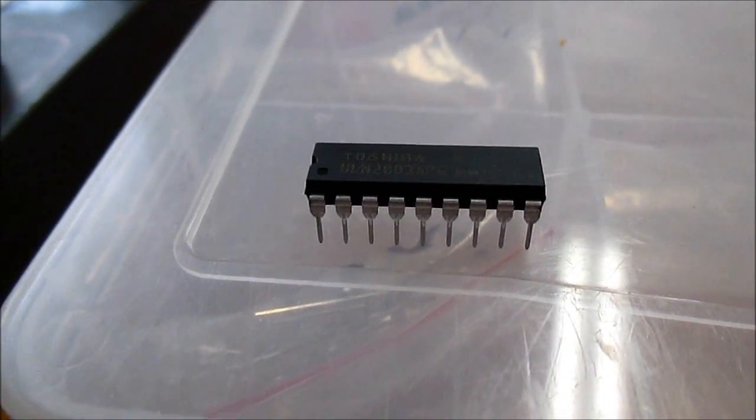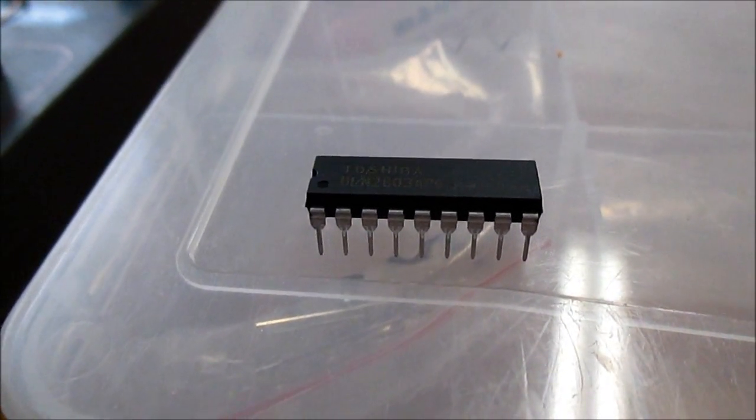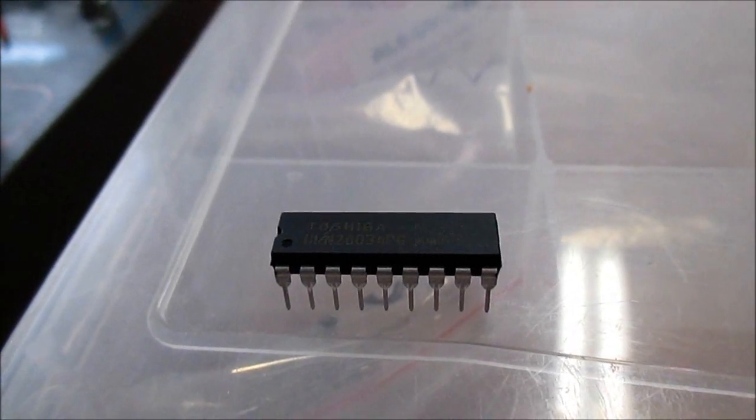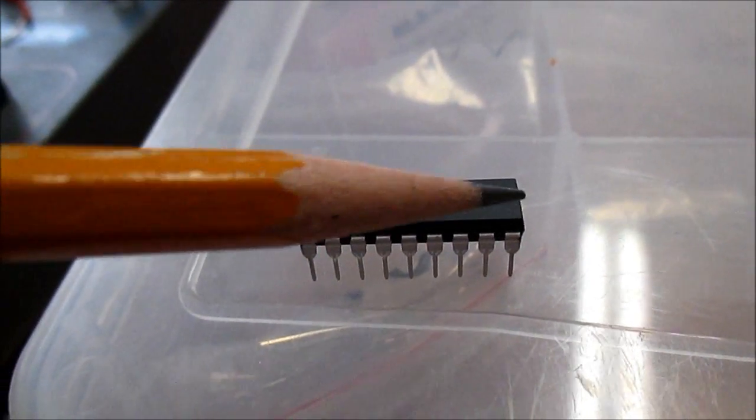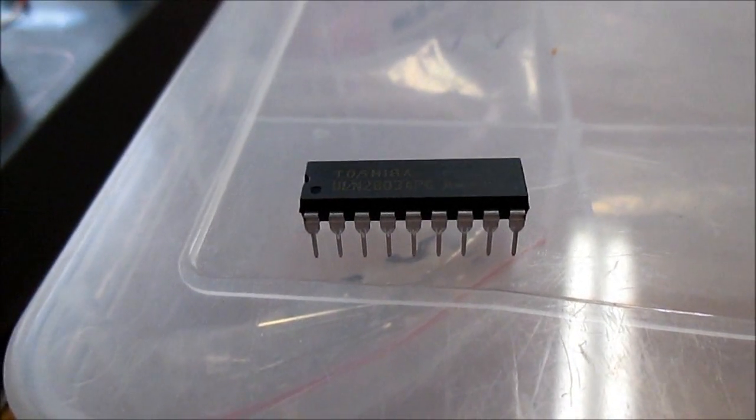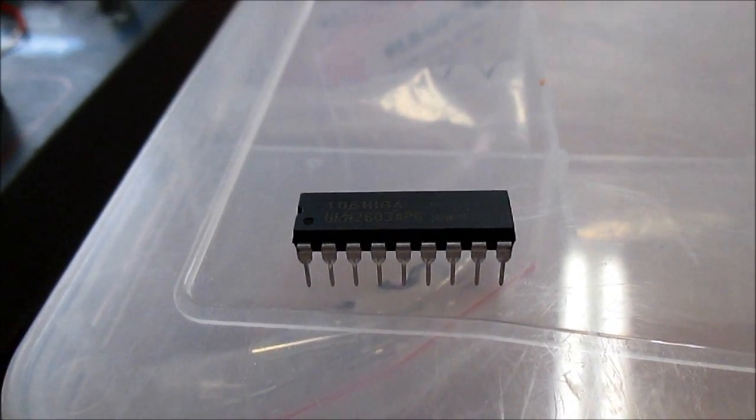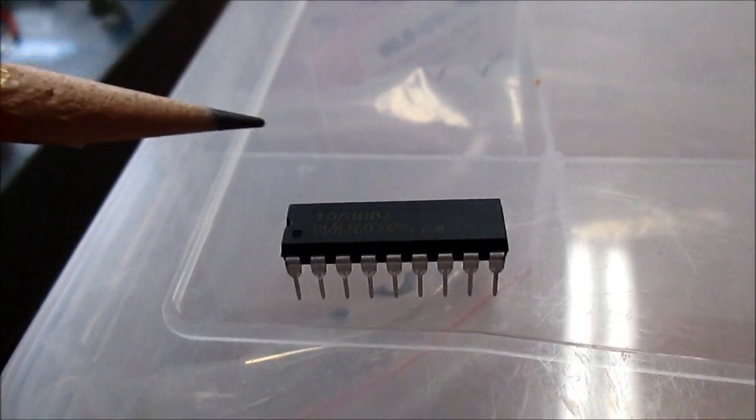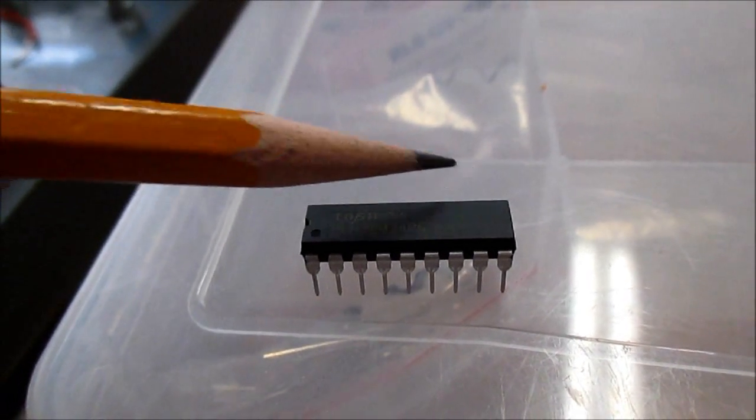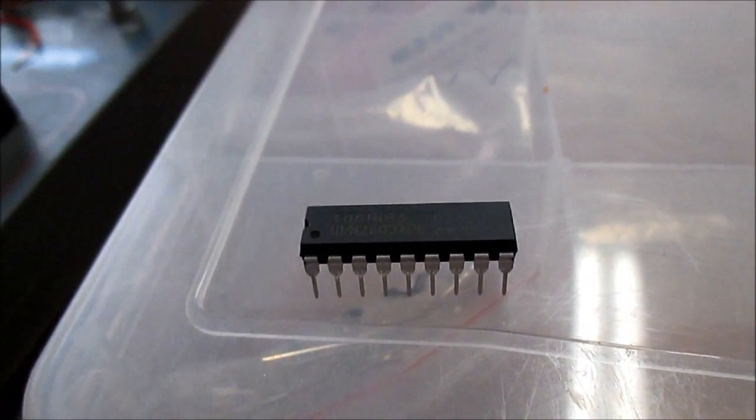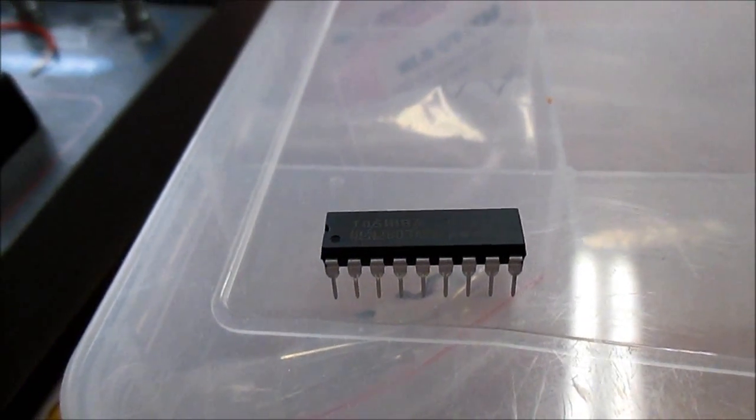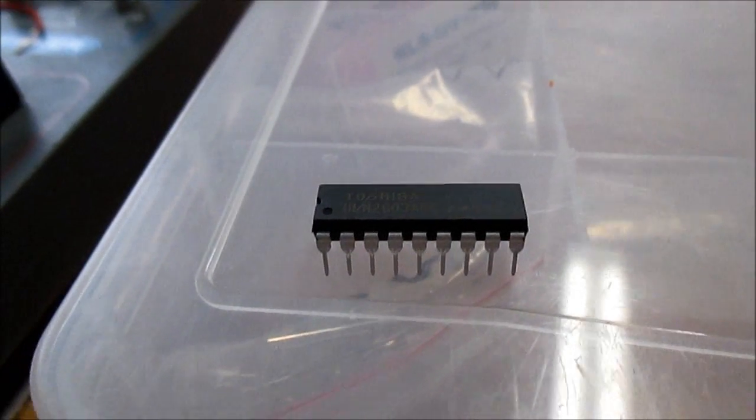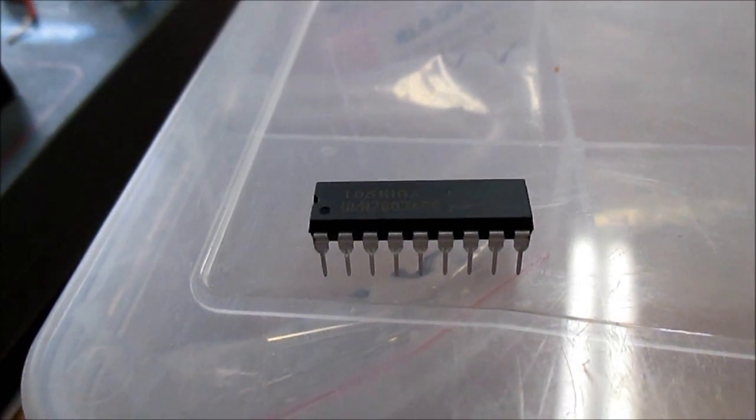Now let's say, for example, you have a 24 volt 1.2 amp motor. Well, you want to get three channels together so you have 1.5 amps and that gives you a little bit of headroom. So just combine three of the inputs together and tie three of the outputs together, giving you maximum current of 1.5 amps and there you go. No problem handling that motor.